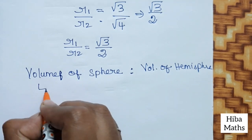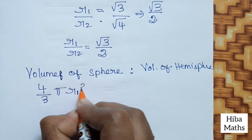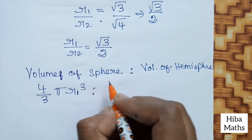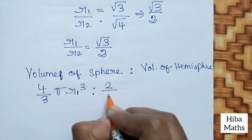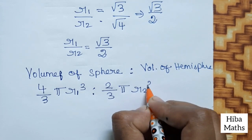Volume of sphere is 4/3 π R₁³. Volume of hemisphere is 2/3 π r₂³.